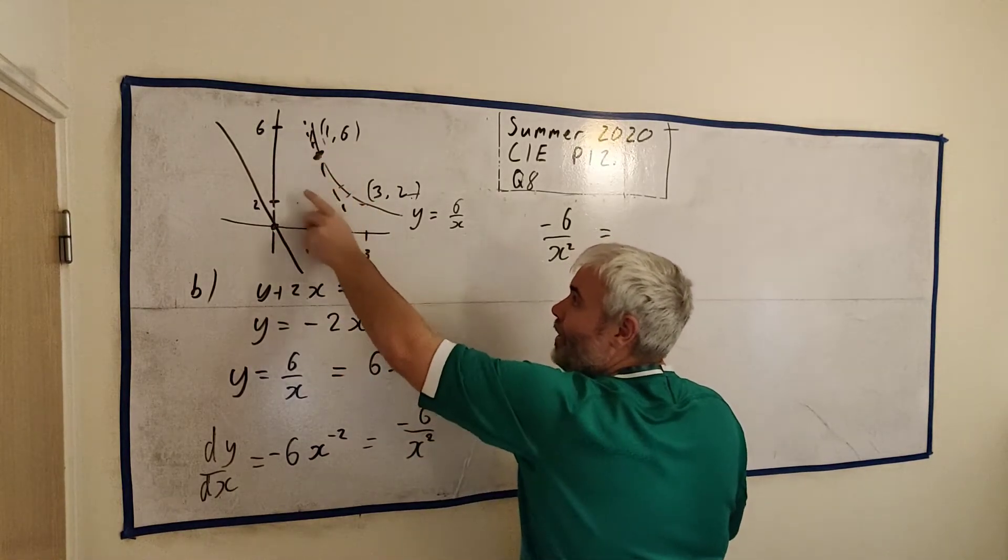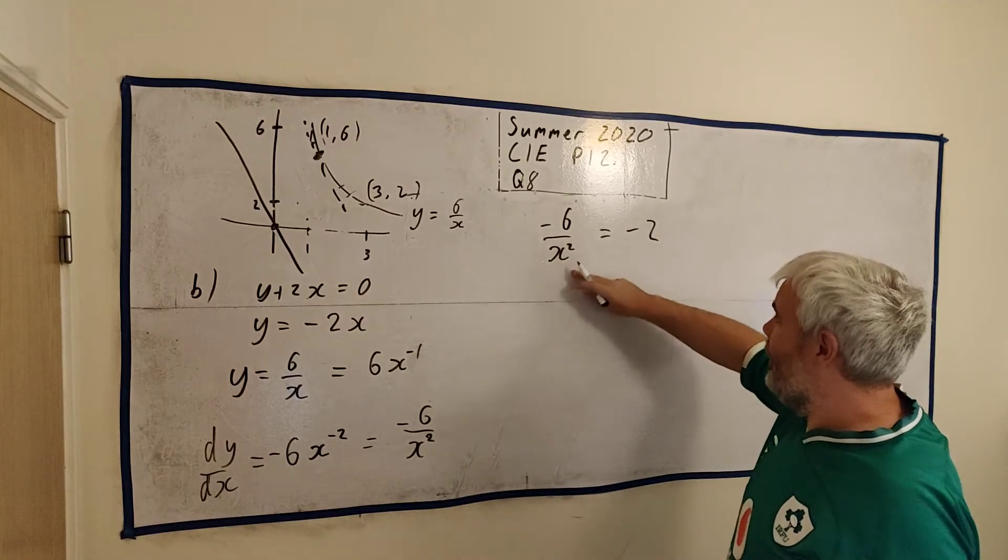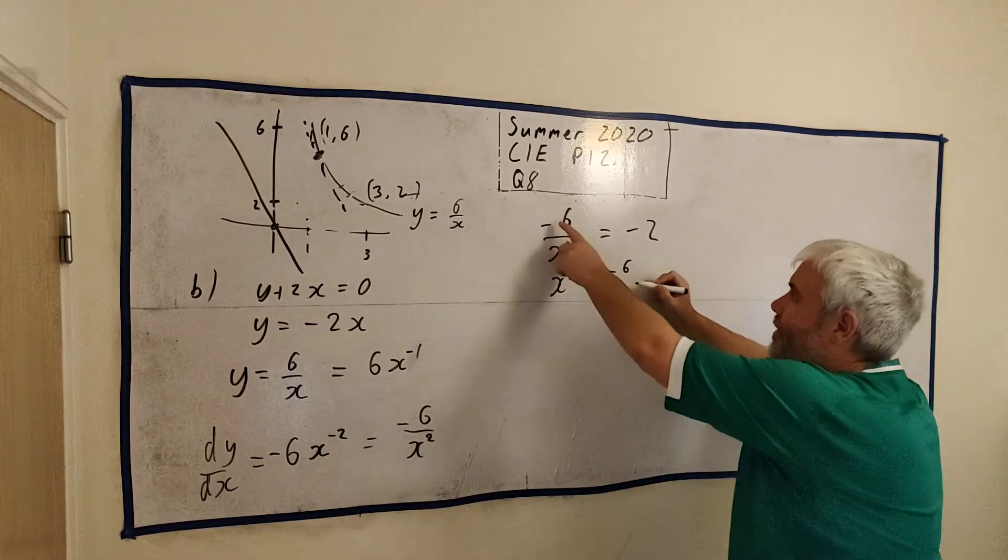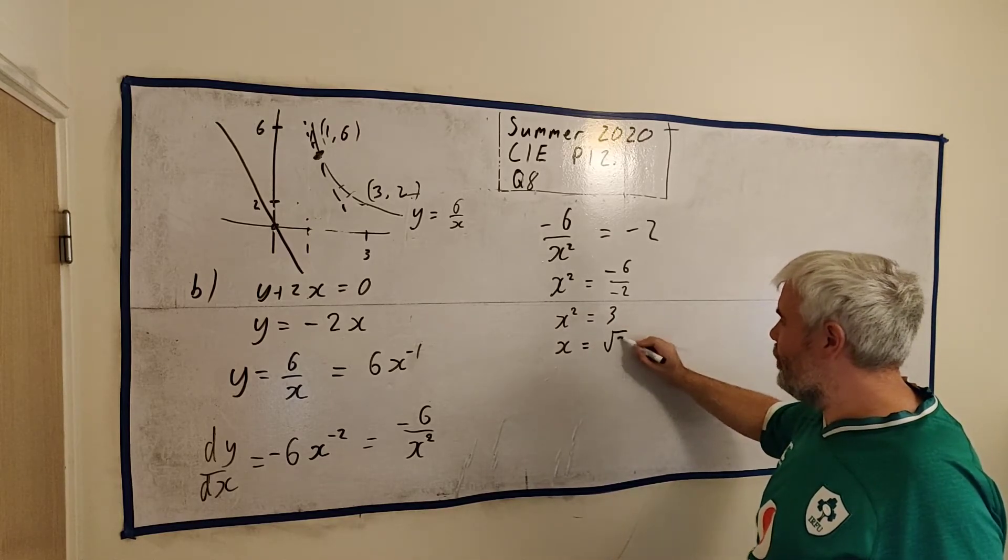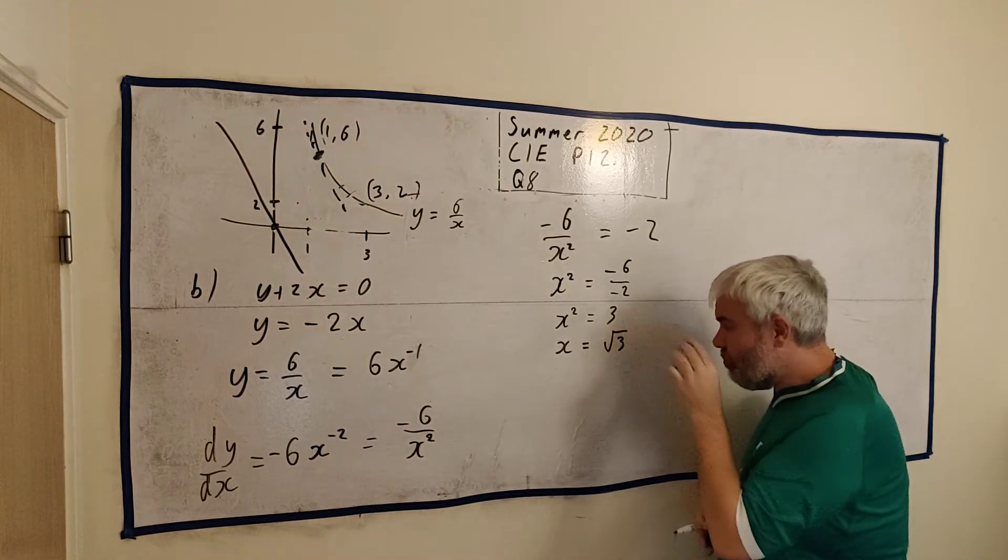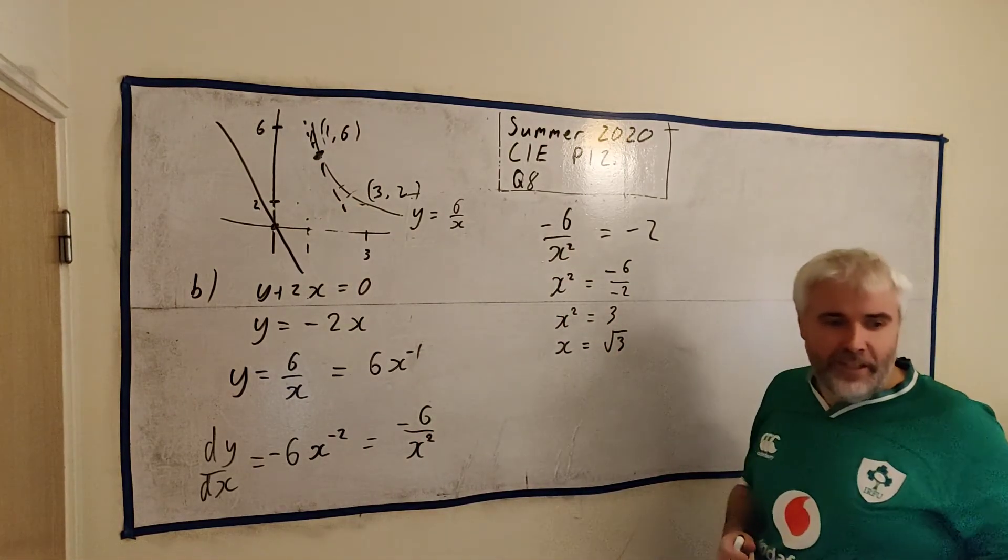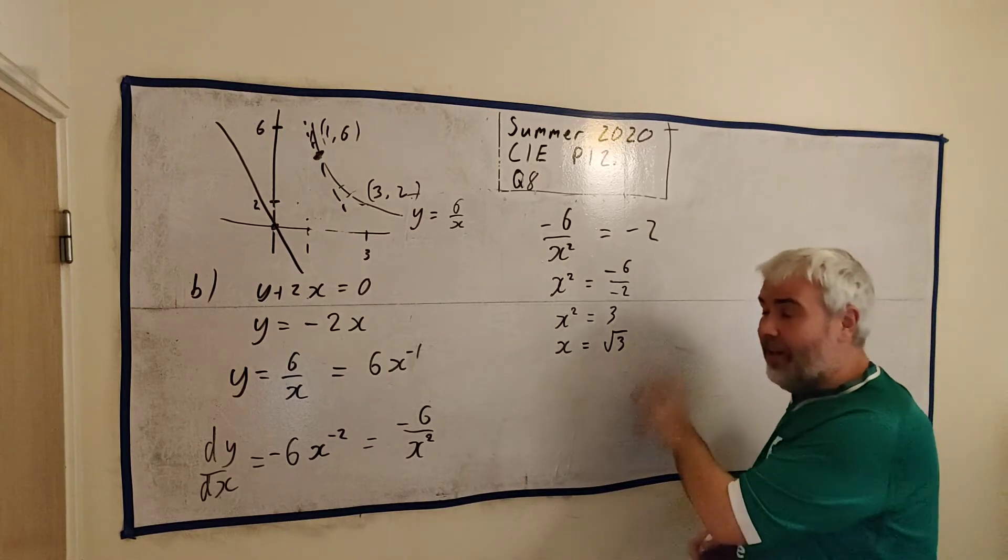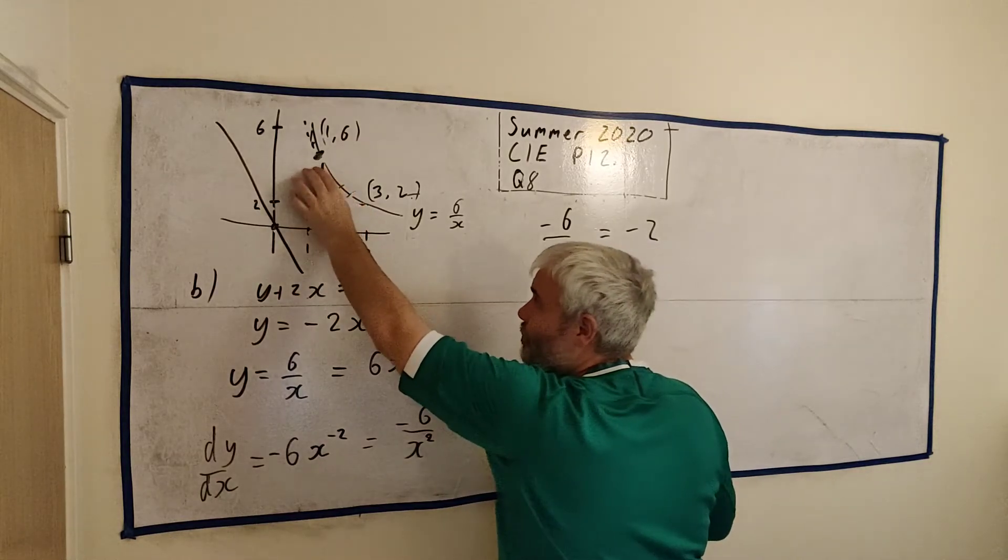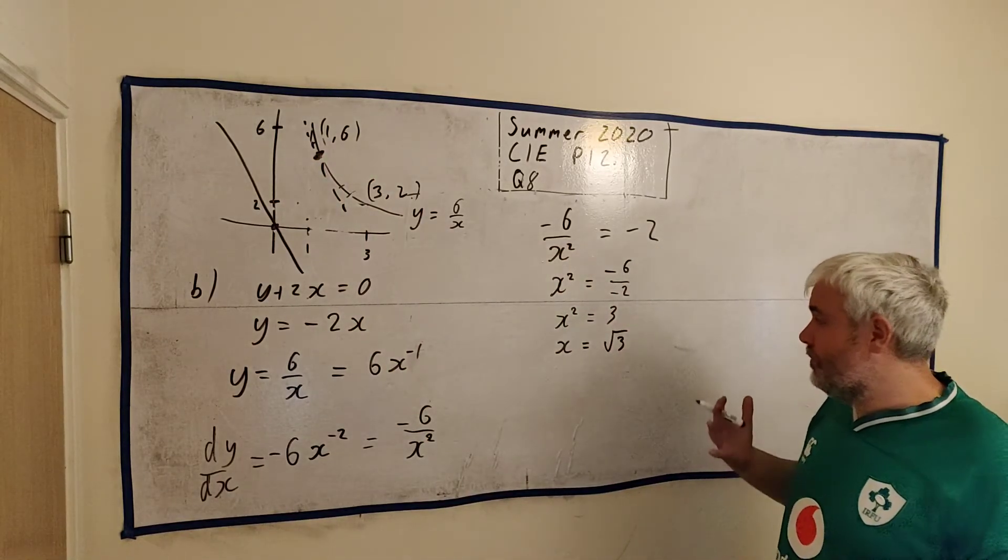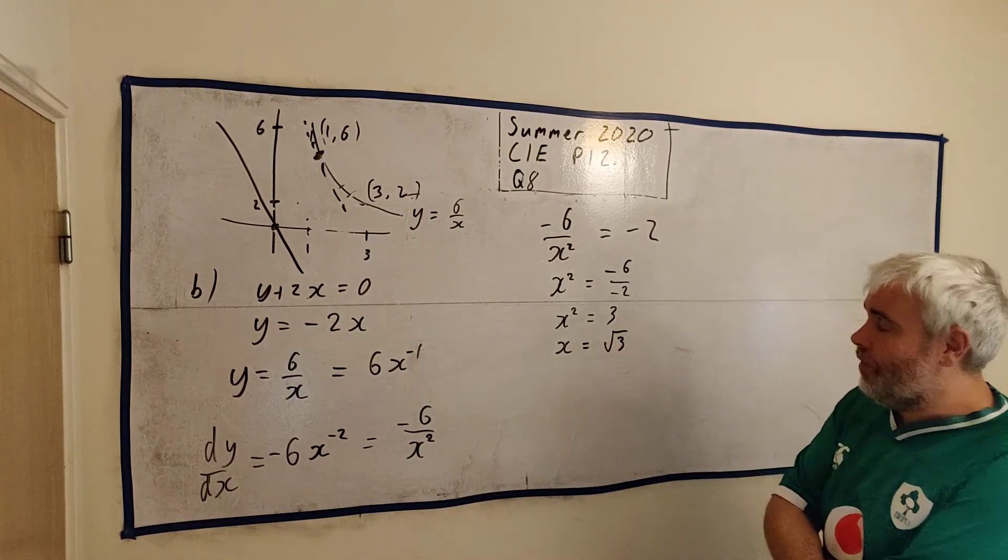That means I can find x. I just need to rearrange all this. Let's get x on its own. x squared is equal minus six divided by minus two. x squared is equal to three. x is equal to plus or minus the square root of three. But I know it's not minus. I just know it's not minus because I was able to draw the picture. If you weren't able to draw the picture, you might still have minus there. And if you kept it to the end of the question, you'd probably lose a mark. It's definitely not because they drew us a picture where x was positive. So it is positive.